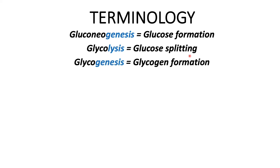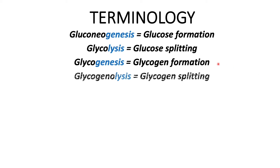Next is glycogenesis: 'glycogen' and 'genesis' refers to formation — so glycogen formation. This commonly occurs in the liver and muscle cells and is basically the storage form of glucose. Next is glycogenolysis, the opposite of glycogenesis: 'glycogen' and 'lysis' refers to splitting — so glycogen splitting, where glycogen is broken down into the end product of glucose.